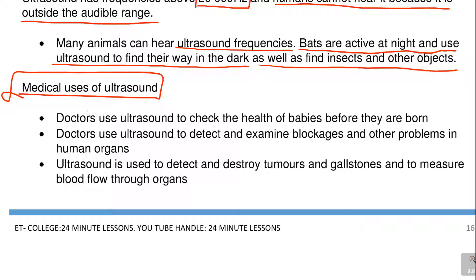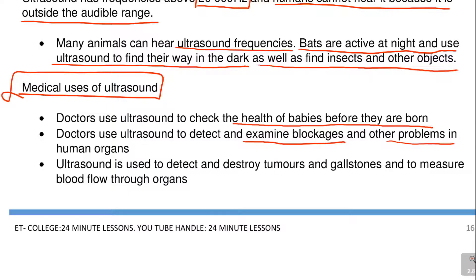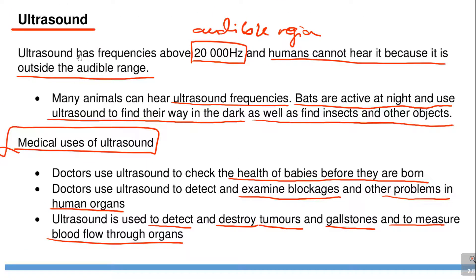The medical uses of ultrasound are very important. Number one, doctors use ultrasound to check the health of babies before they are born — when you go for a scan, ultrasound detects if the baby is healthy or if there is a problem. Doctors also use ultrasound to examine blockages or other problems in human organs, such as tumors or blood clots. Ultrasound is also used to detect and destroy tumors and gallstones, and to measure blood flow through organs.